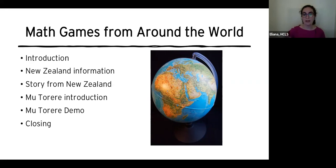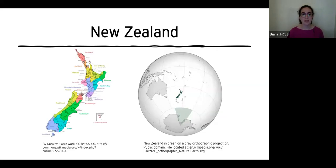Now, on to more information about New Zealand. New Zealand is an island country in the southwestern Pacific Ocean. Most of New Zealand is contained on North Island and South Island, but there are about 600 smaller islands owned by New Zealand as well, and they have a claim on a part of Antarctica also.